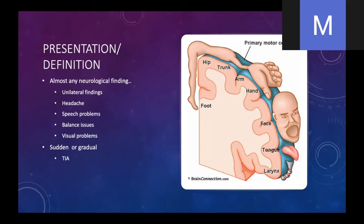I remember the first patient I gave TPA to — they resolved within minutes after getting the medication. My program director said that was probably just a TIA, and the NINDS trial, which is the only positive trial, only showed a positive effect at three months after treatment with TPA. The 24-hour treatment arm did not show improvement. TIA can really resemble a stroke, but those patients are going to get better within the next couple of hours from onset and not have any deficit noted on advanced imaging.